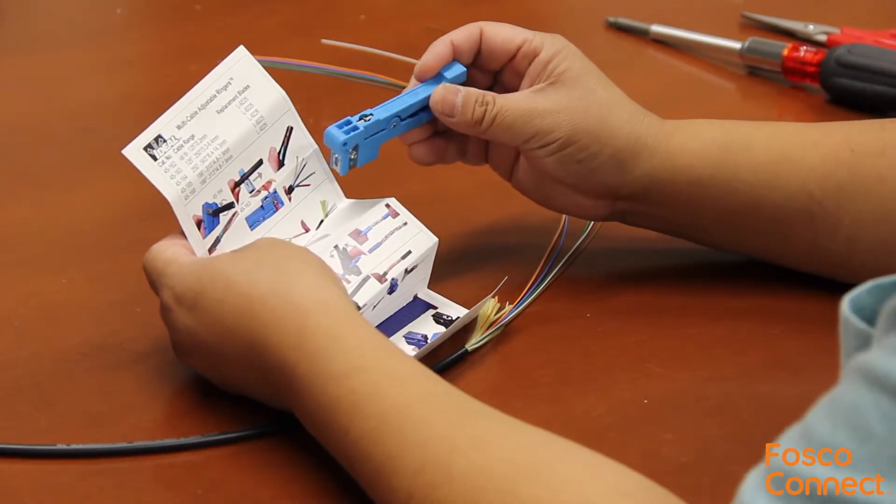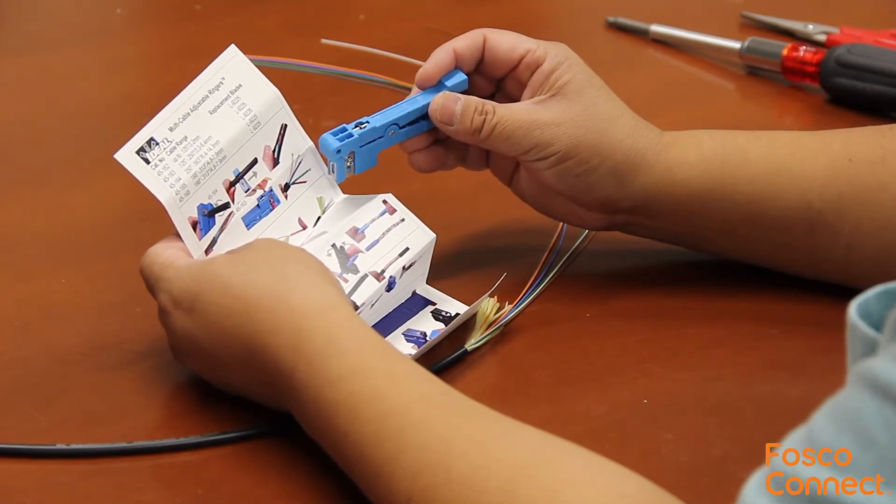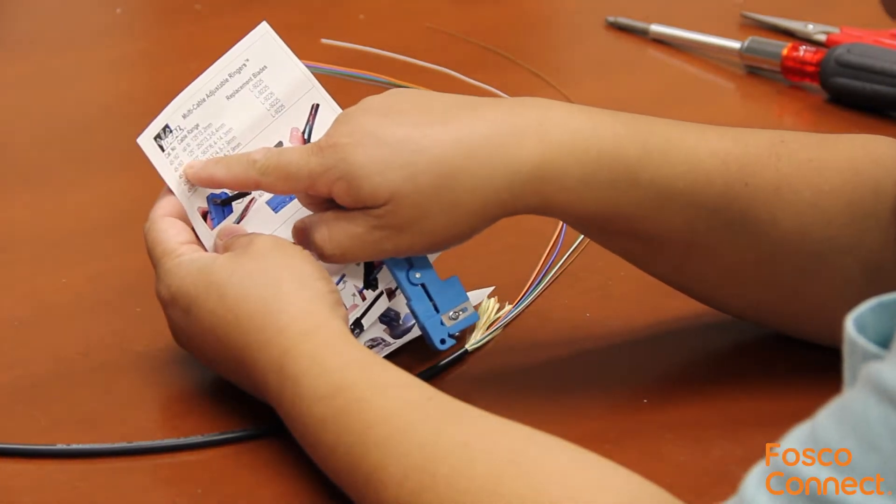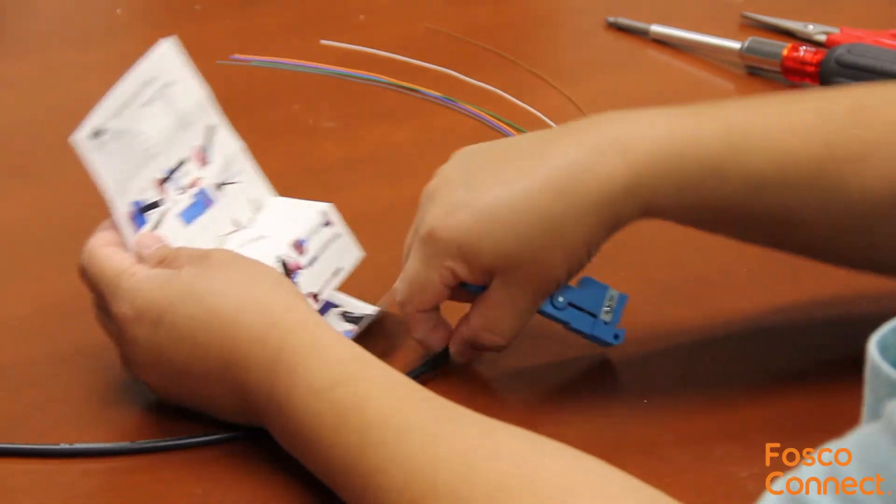This is Ideal Industries 45-163 Multi-Fiber Buffer Tube Stripper. It can strip buffer tubes from 3.2 to 6.4 mm in diameter.